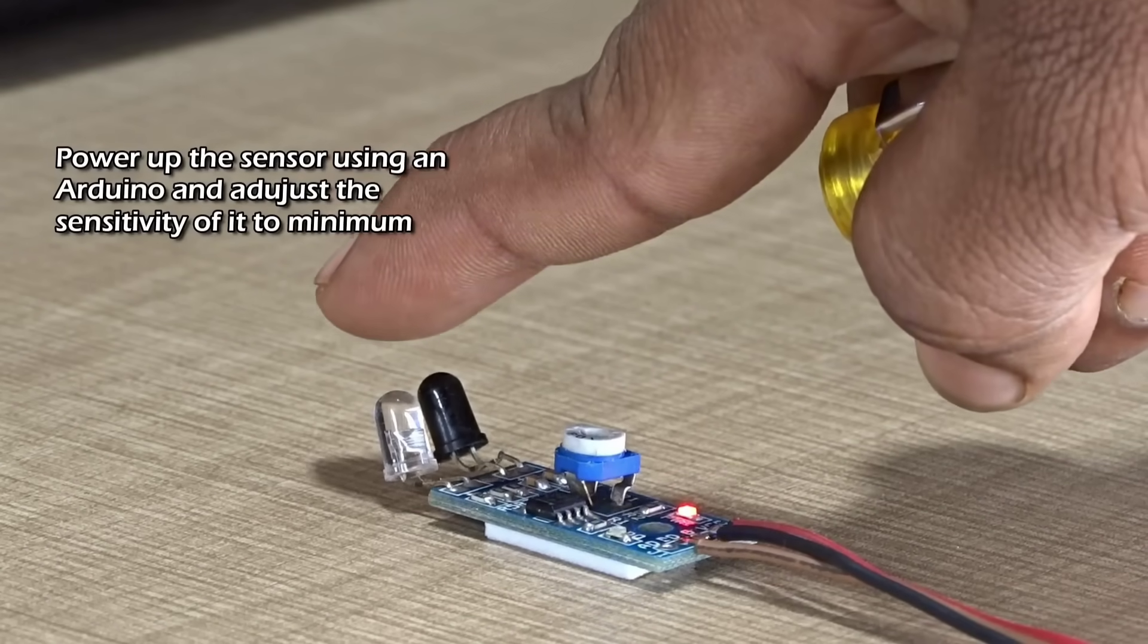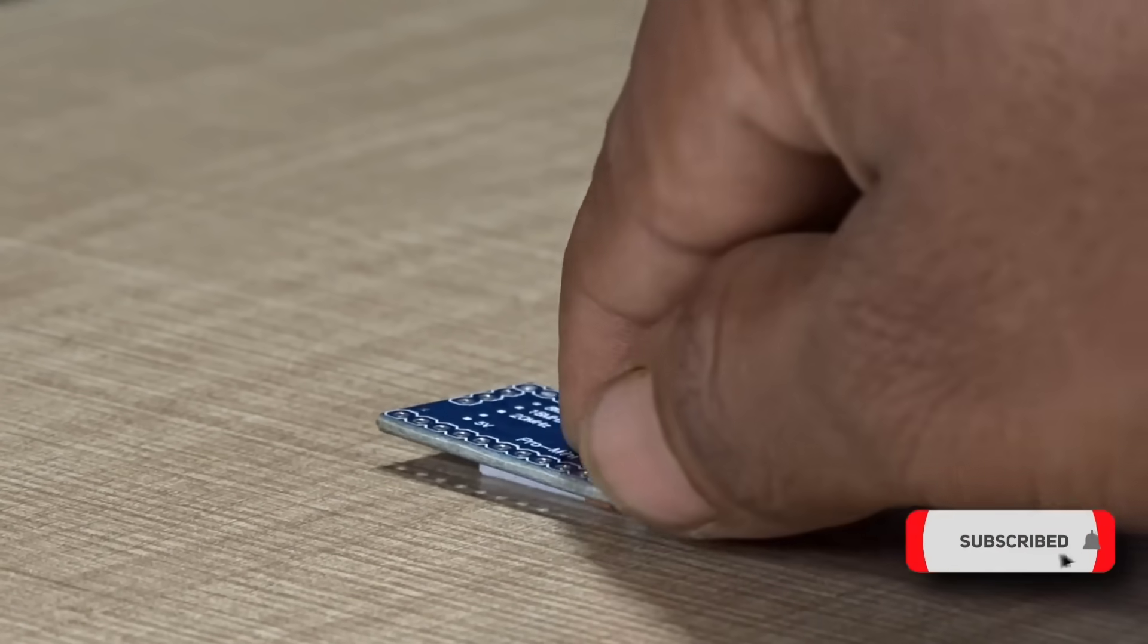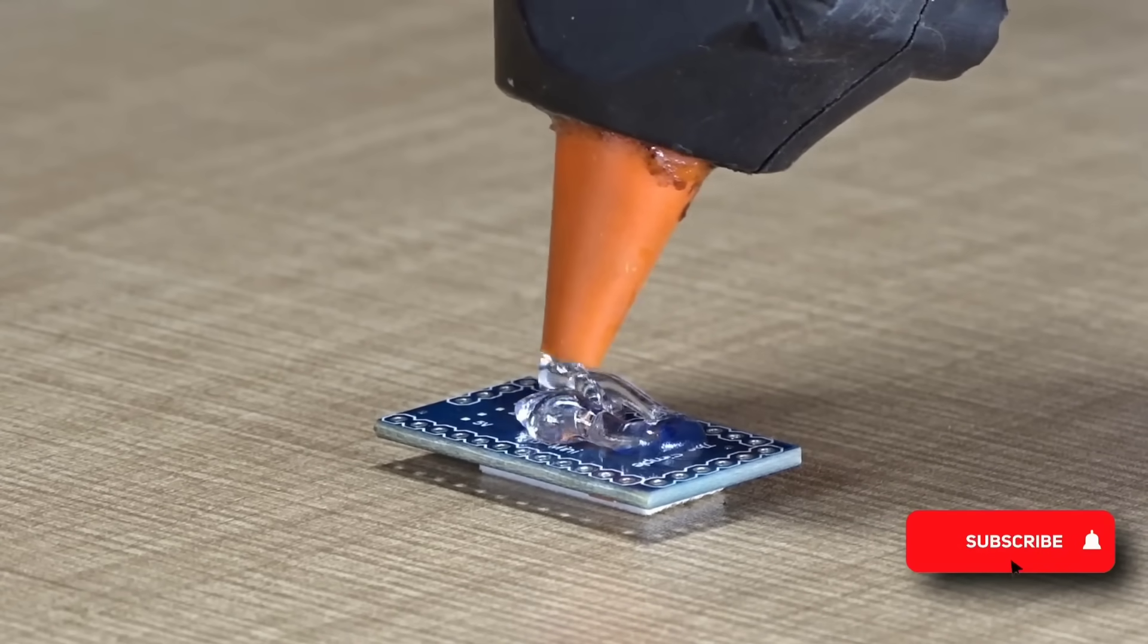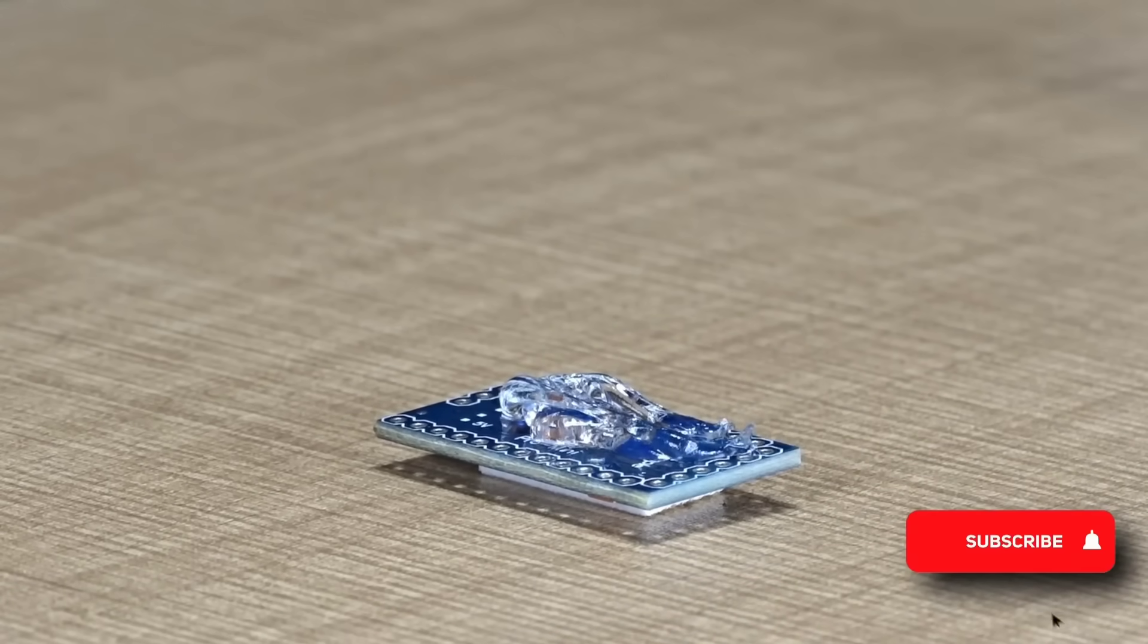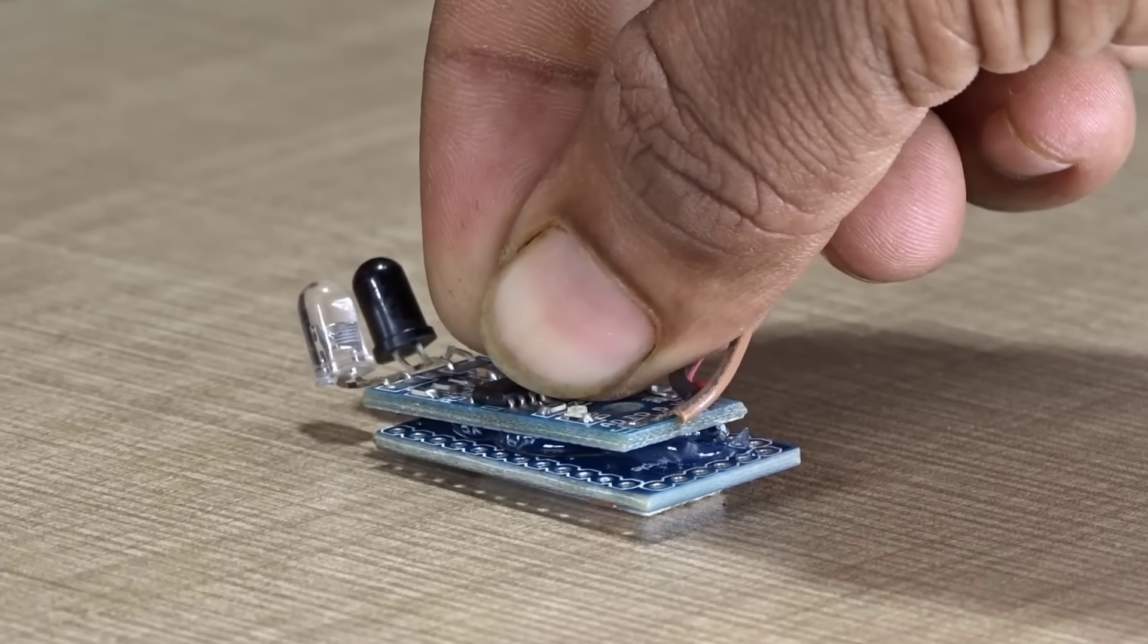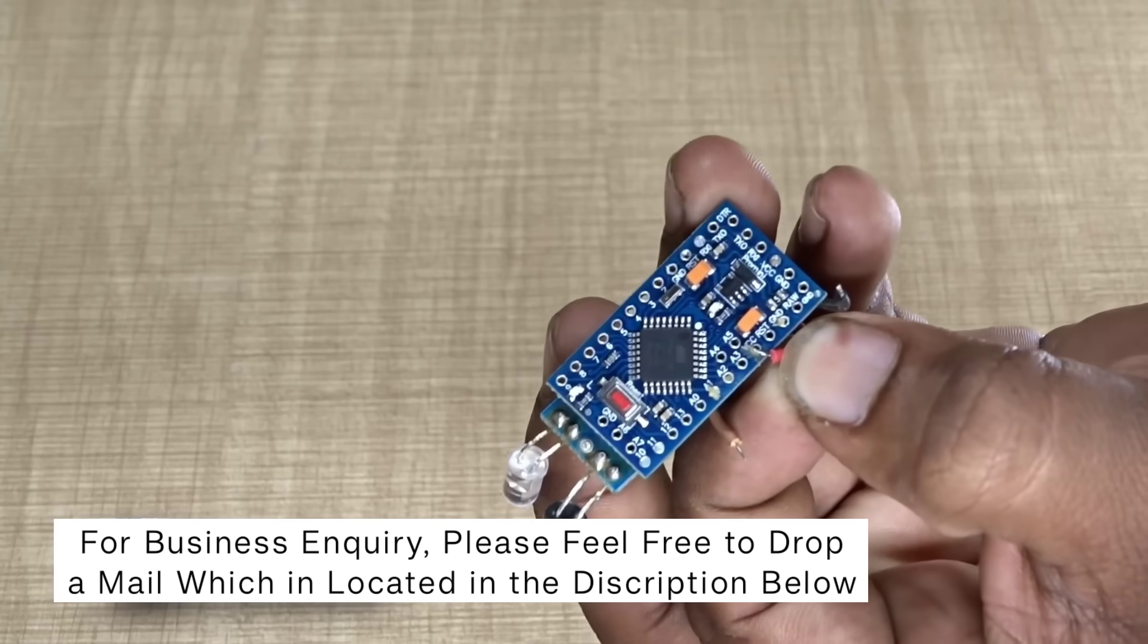Now let's move on to the next important step. In this phase, we'll be attaching the IR sensor onto the Arduino Pro Mini. First, apply a small amount of hot glue on the Arduino board just enough to securely hold the sensor in place. Be careful not to apply too much. After the sensor is fixed in position, we'll begin making the necessary electrical connections.